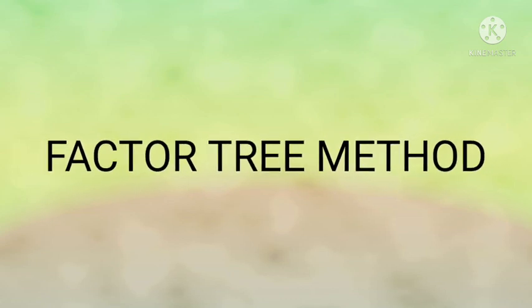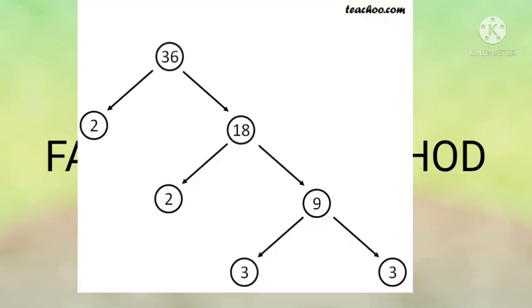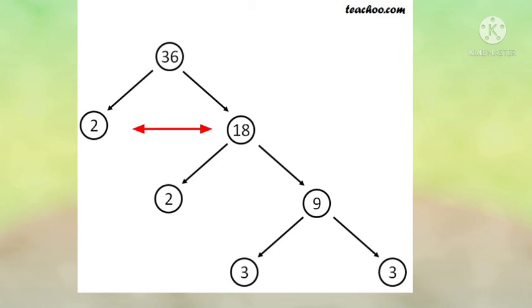Now we will discuss about the Factor Tree method. Here you see 36 is a number. We will find the prime factors of 36. First, 36 is divided into 2 and 18.